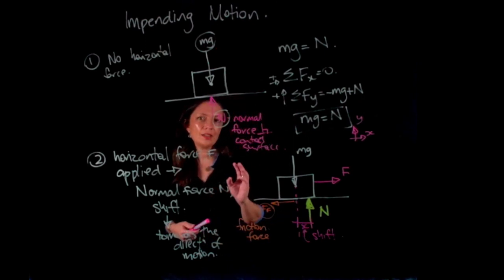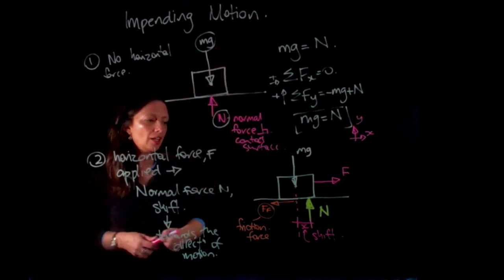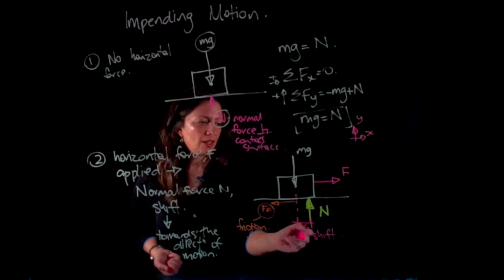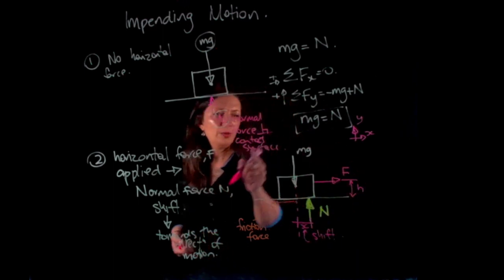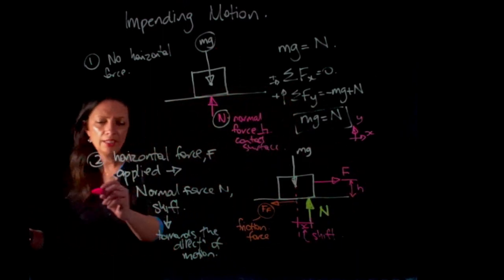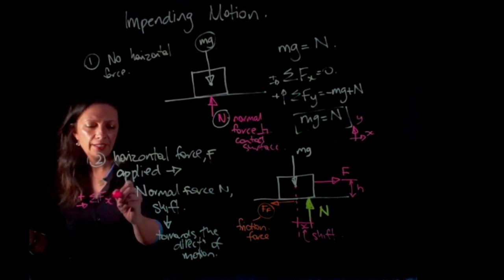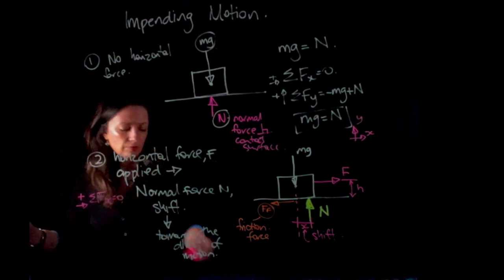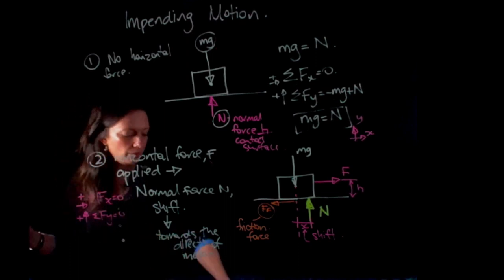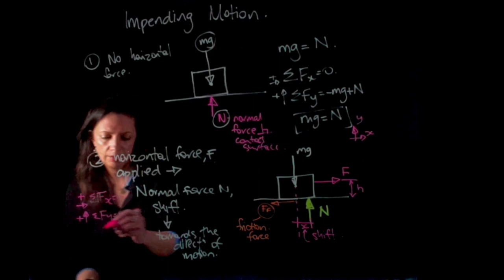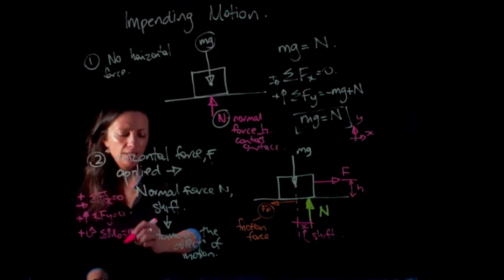So up here I only had two equations for equilibrium. But now that I'm introducing a distance and a height, we have a moment equation. So I'm going to have the sum of the forces in the x equals zero, the sum of the forces in the y equals zero, and the sum of the moments about a point equals zero.